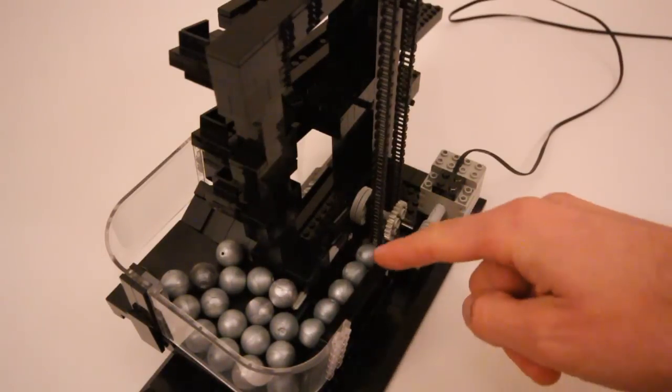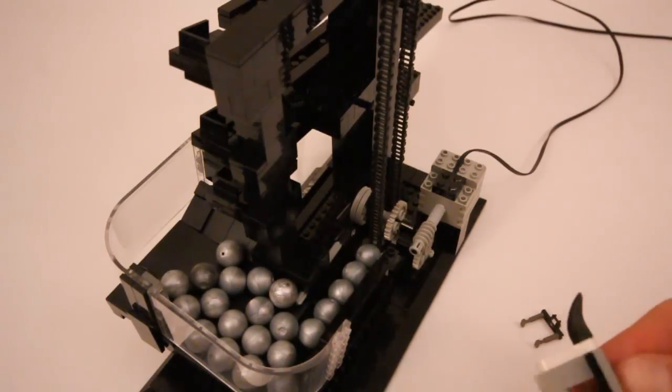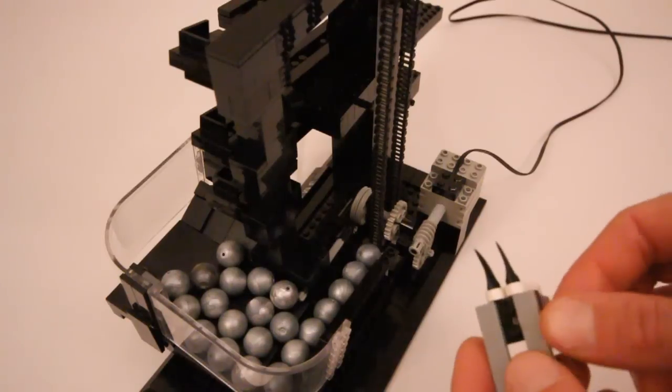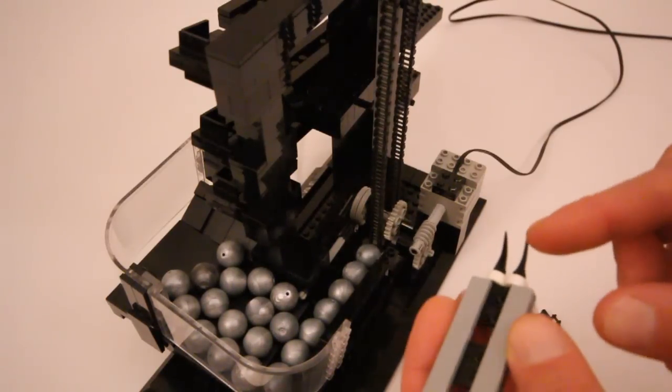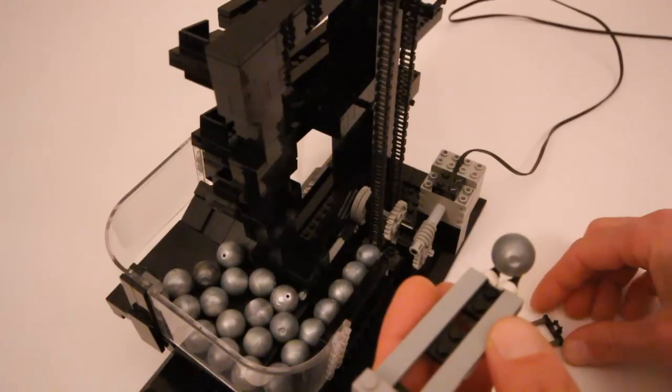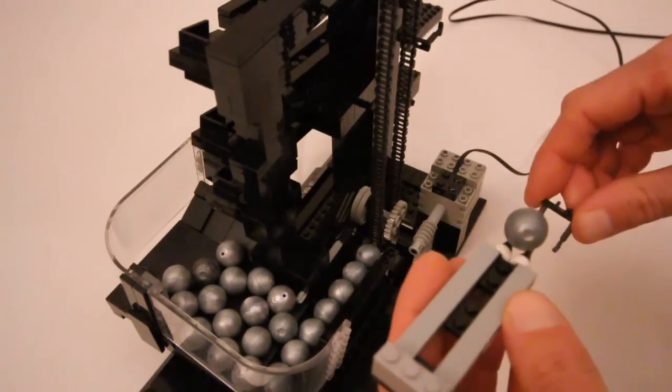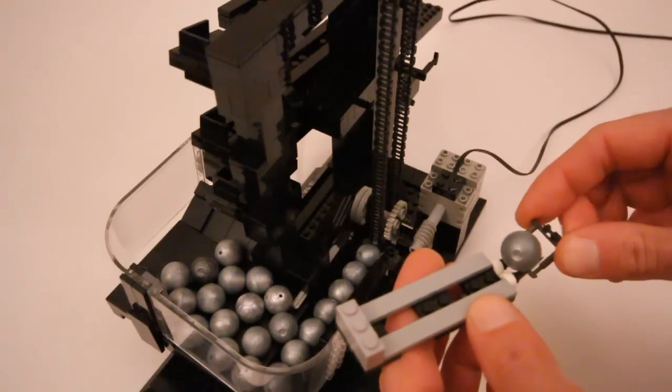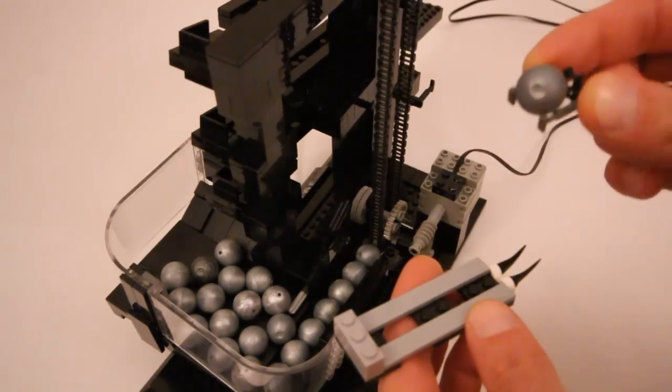The end of the channel actually has these two little teeth pieces here, which hold the last ball. And then as the pickup comes around, the hammers pass on either side of the teeth, and pick the ball up.